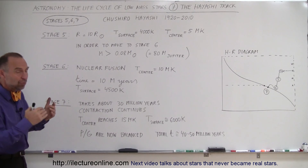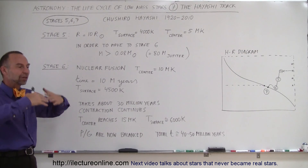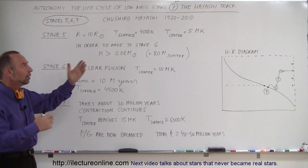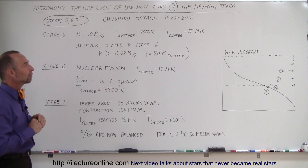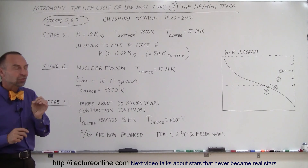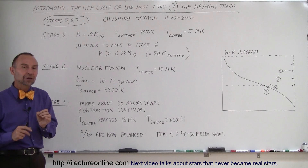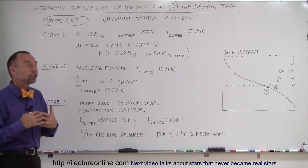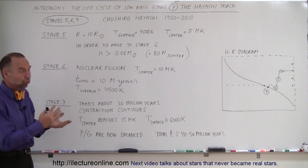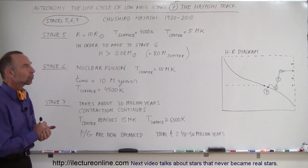Surface temperatures, with the increase in temperature inside, are getting hotter and hotter, reaching about 4,000 Kelvin. At the center, it's still not yet hot enough to start nuclear fusion — temperatures are estimated at about 5 million degrees Kelvin.